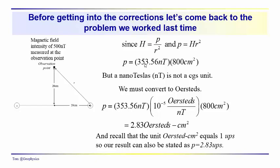A common unit of measurement when using a magnetometer is nanoteslas — you will very often record magnetic field intensities in nanoteslas. However, the nanotesla is not the basic CGS unit of magnetic field intensity; the Oersted is. So we had to convert from nanoteslas to Oersteds.